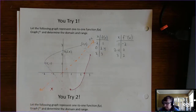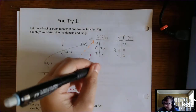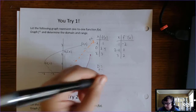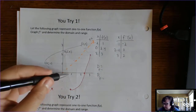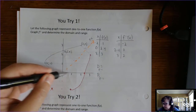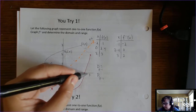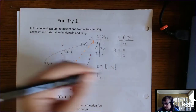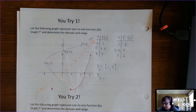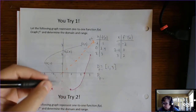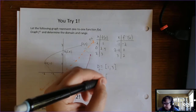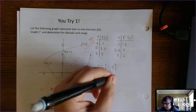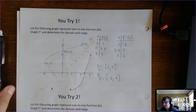The domain for the inverse starts at 1 and ends at 3 — both 1 and 3 are x-coordinates that are points, so they are bracketed. The range starts down at negative 2 and goes up to a highest point of 2. So that's the domain and range.